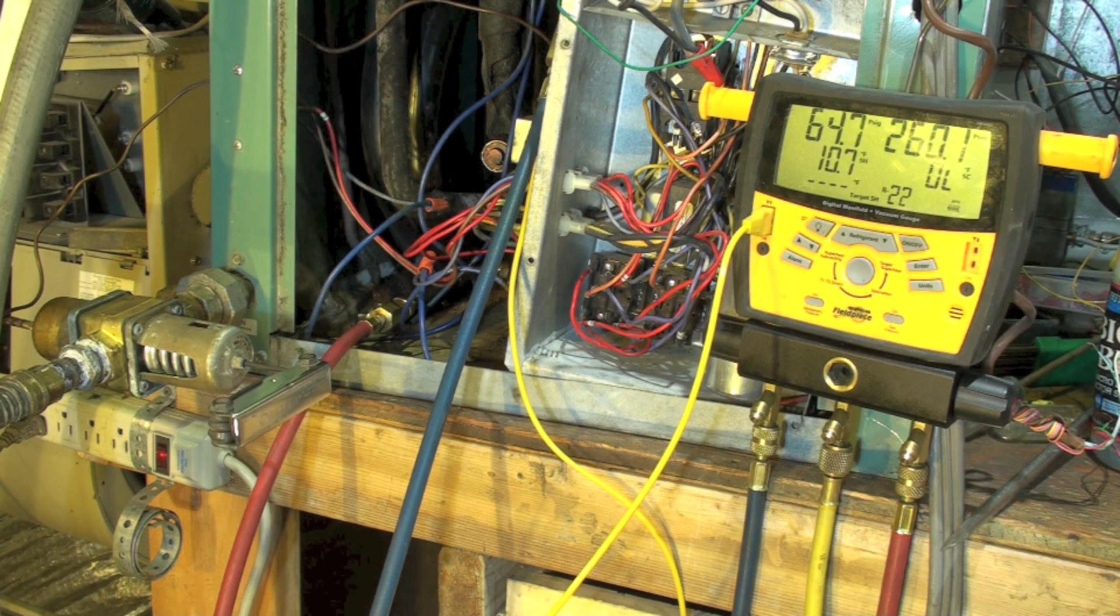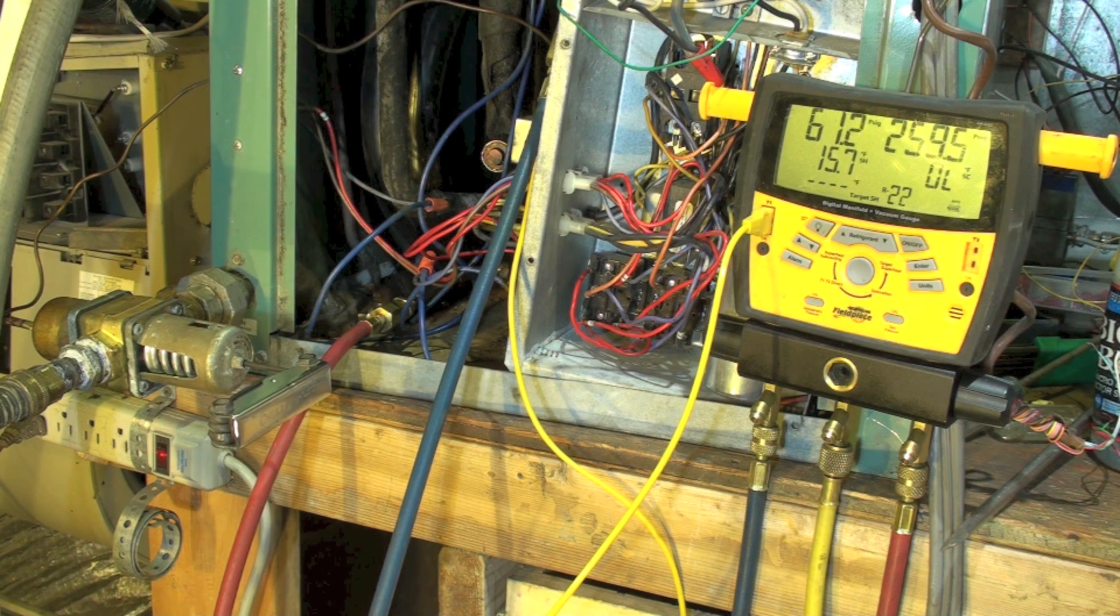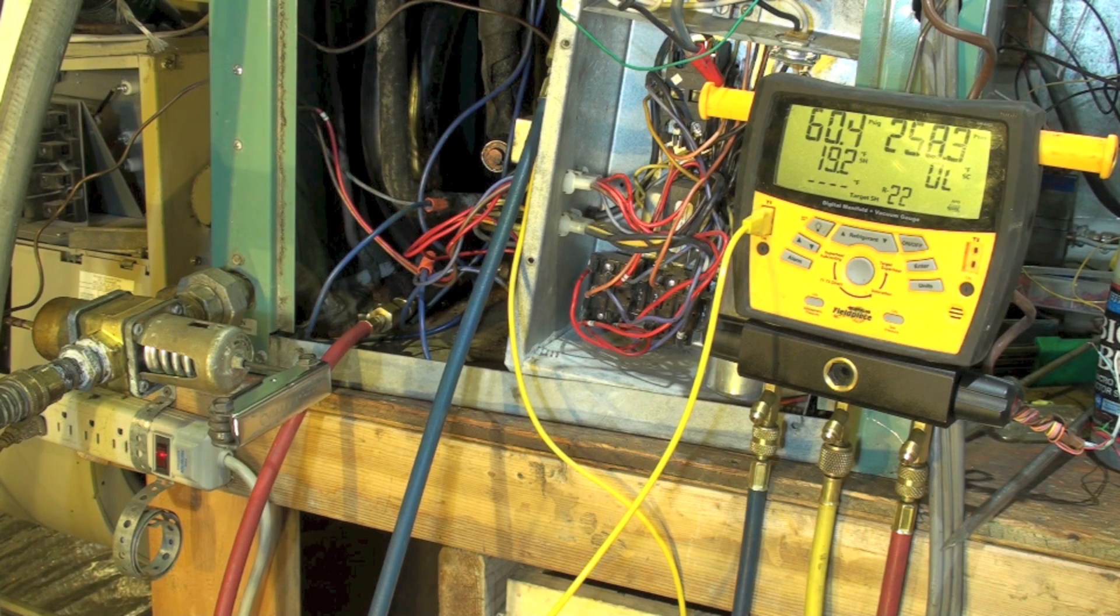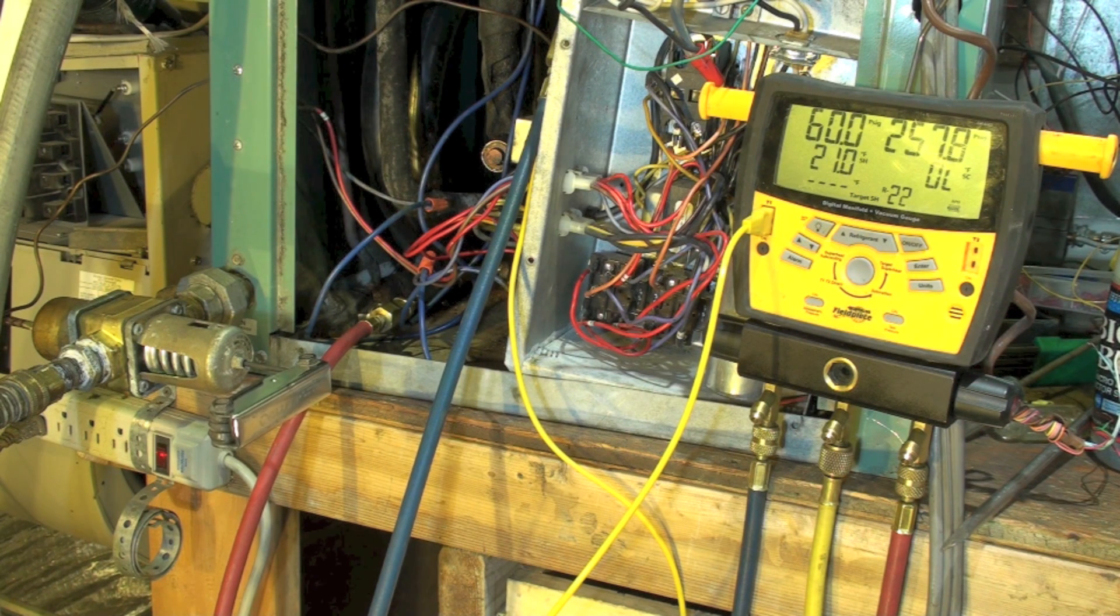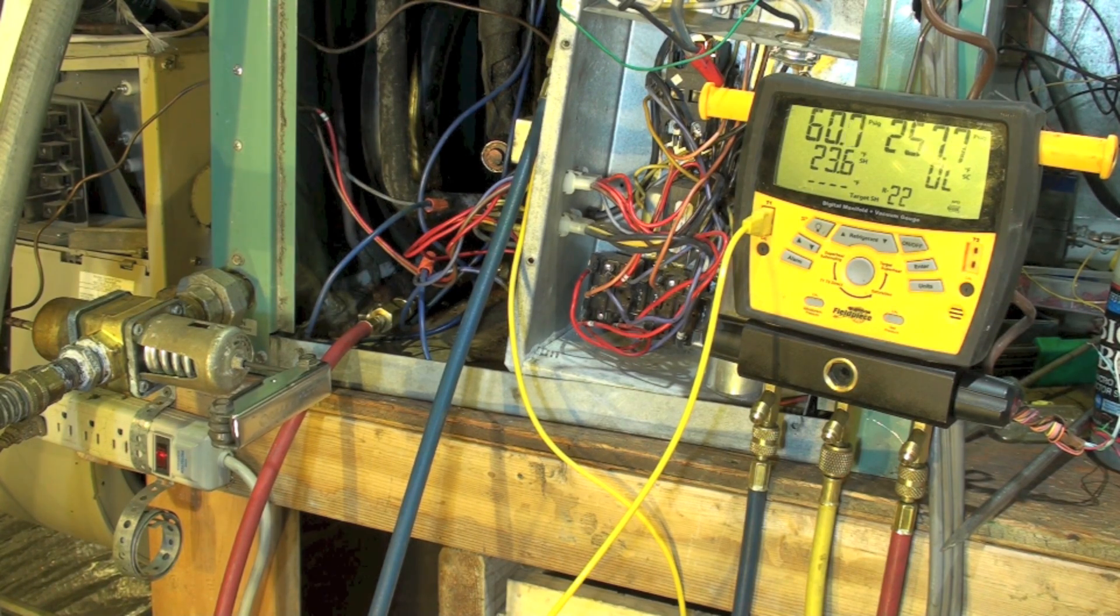Now you can see an immediate drop in the head pressure. You also see a drop in the suction pressure, and that's normal because this is a fixed orifice device unit. There's actually about four cap tubes up there. Now my suction pressure kind of dropped in the toilet, superheat went way up. We'll probably adjust a little bit from there.